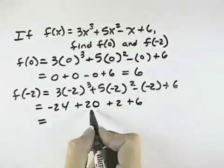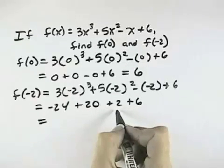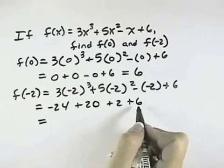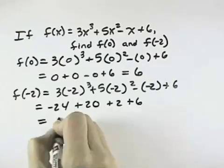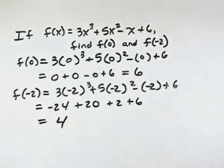Negative 24 plus 20 is negative 4, plus 2 is negative 2, plus 6 will give us positive 4. So f of negative 2 equals positive 4.